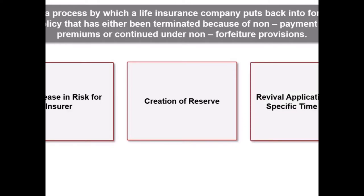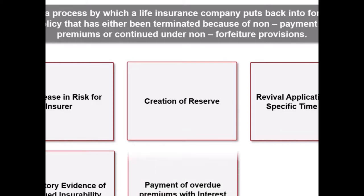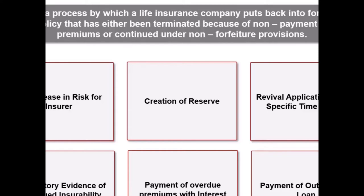Third, revival application within specific time period. Fourth, the insured must present satisfactory evidence of continued insurability to the insurance company. Fifth, the policy owner is required to make payment of all overdue premiums with interest from the due date of each premium. And sixth, the insured must also pay outstanding policy loan or reinstate indebtedness, if any.